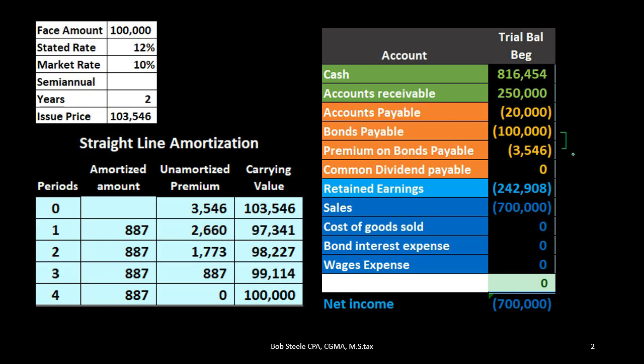We're going to use the effective method, but let's look at the straight-line method first since it's easy to see. Note that the effective method is the preferred method under generally accepted accounting principles — it's more precise. Under straight-line, we take the $3,546 and divide it by four periods (two years, semi-annual payments), giving us $887 per period.